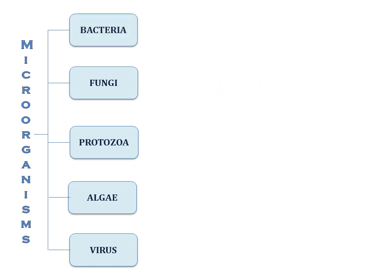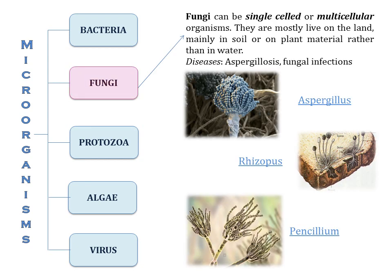The second group of microorganisms is fungi. Fungi can be single-celled or multicellular organisms. They mostly live on land, mainly on soil or on plants, rather than in water. Some examples of fungi are Aspergillus, which is found both indoors and outdoors; Rhizopus, which is usually bread mold — if we keep bread outside for more than one week, we can find gray or black patches on top, which is the fungus Rhizopus. The third example is Penicillium, from which a molecule is used as an antibiotic. Diseases caused by fungi include Aspergillosis and fungal infections.